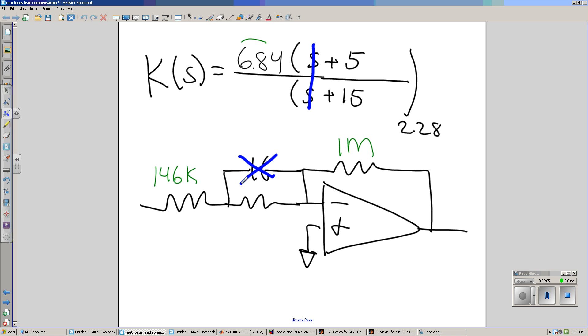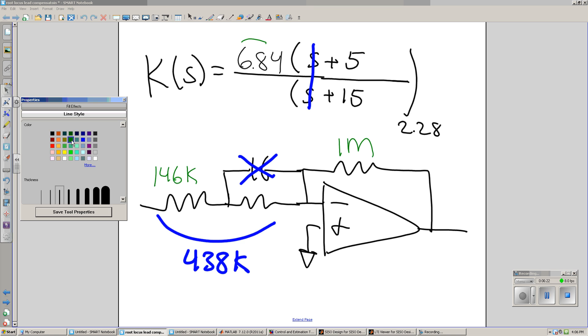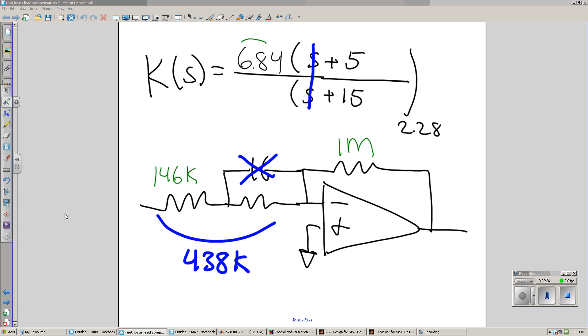The gain, then, is 1 meg over the total resistance. It needs to be 2.28. For a total resistance of 438 kOhms. The remaining resistance, then, is 292 kOhms.